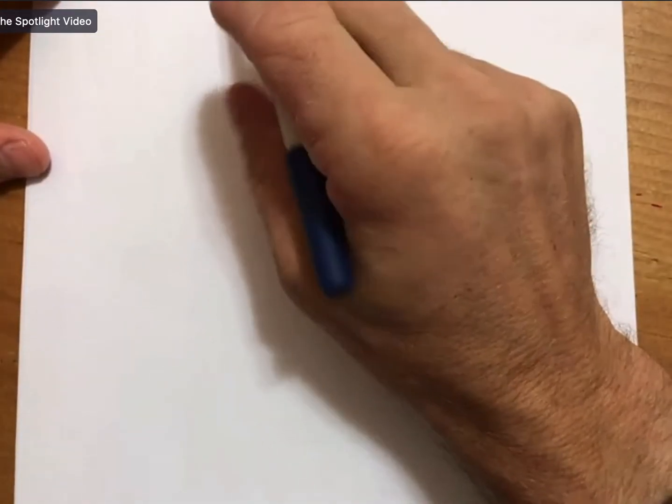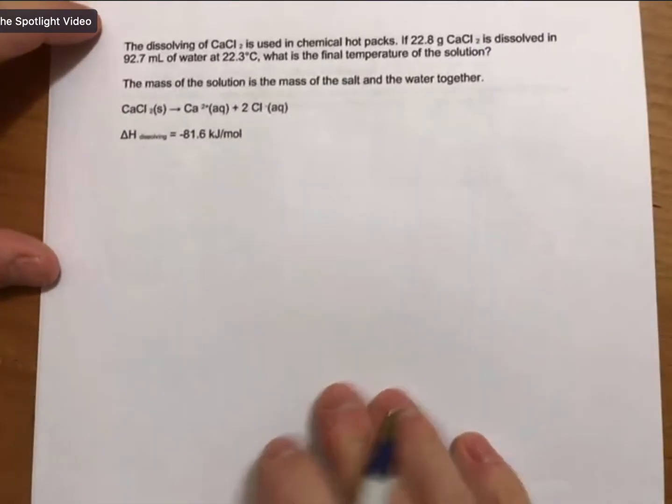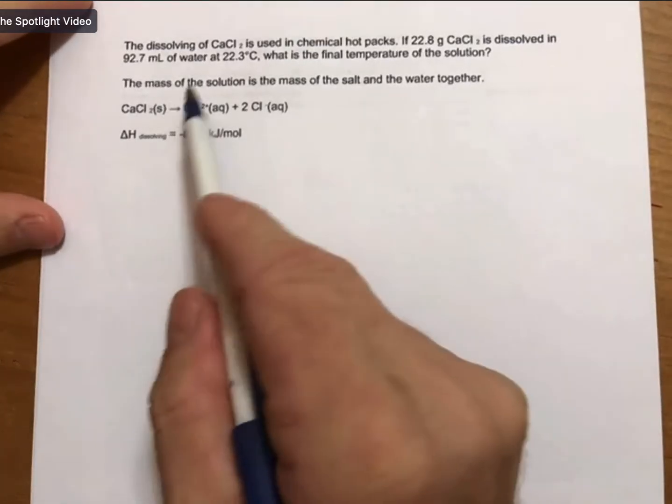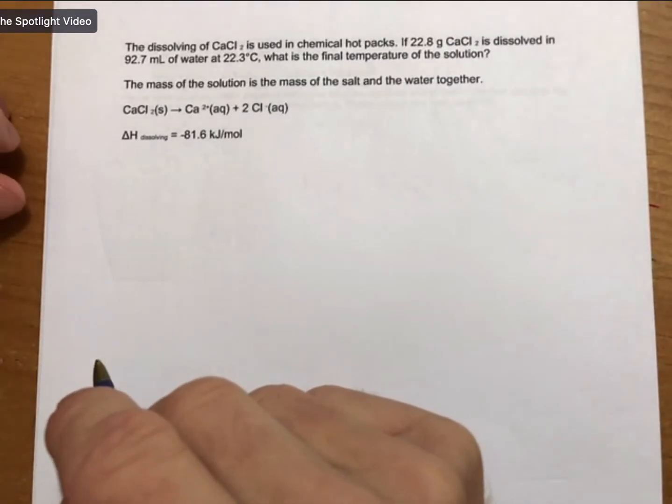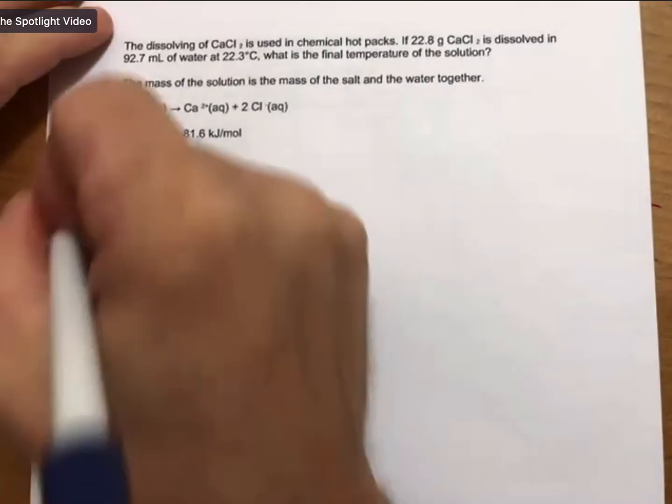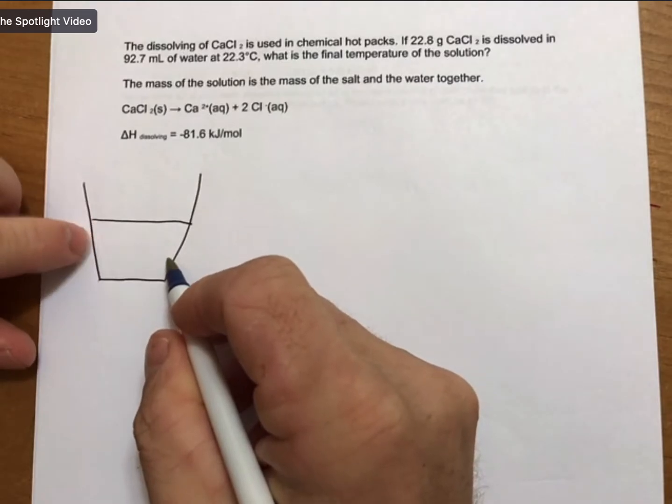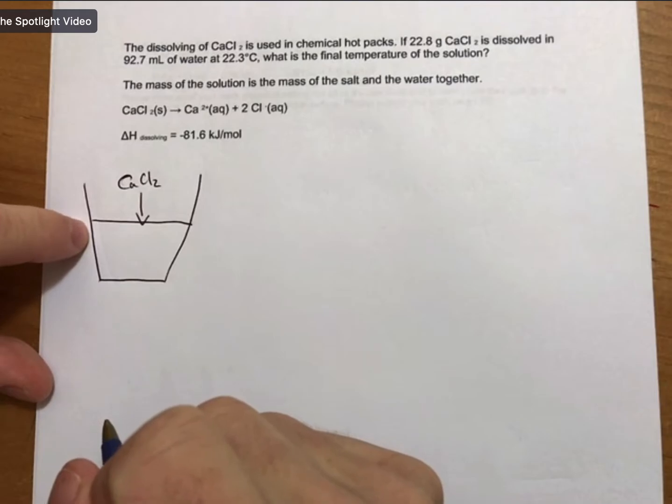This is about coffee cup calorimetry with a reaction. You can tell it's got a reaction involved because it has a balanced reaction as part of the problem statement. Let me read over this. The dissolving of calcium chloride is used in chemical hot packs. If 22.8 grams of calcium chloride is dissolved in 92.7 milliliters of water at 22.3 degrees Celsius, what is the final temperature of the solution? The mass of the solution is the mass of the salt and the water together. So the solution starts out as water, we add some calcium chloride to it, and it becomes a solution because the calcium chloride dissolves.